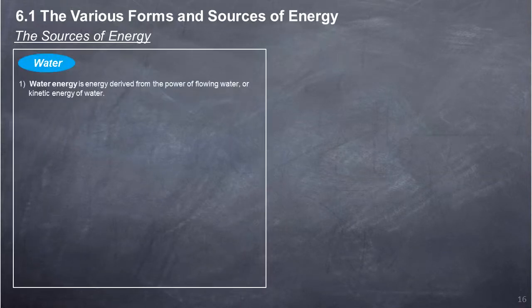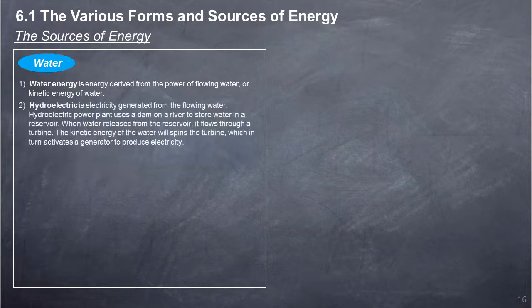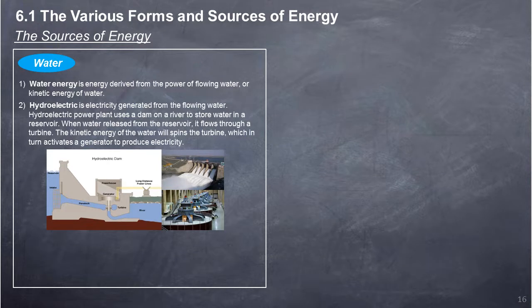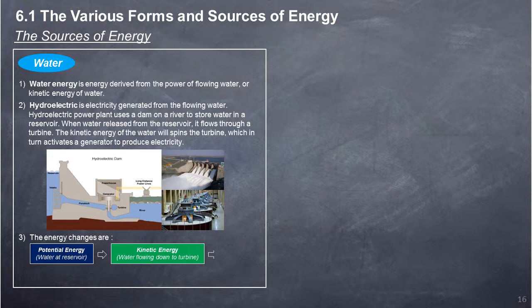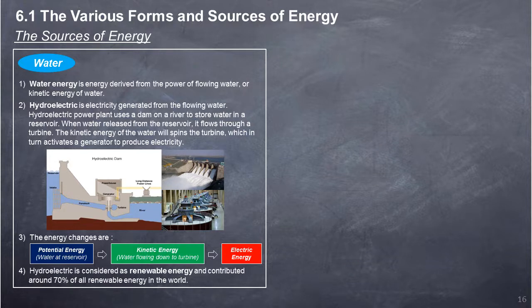Water Energy: Water energy is energy derived from the power of flowing water, or kinetic energy of water. Hydroelectric power is electricity generated from flowing water. A hydroelectric power plant uses a dam on a river to store water in a reservoir. When water is released from the reservoir, it flows through a turbine. The kinetic energy of the water spins the turbine, which activates a generator to produce electricity. The energy changes are: potential energy of water at reservoir → kinetic energy of water flowing down to the turbine → electric energy. Hydroelectric power contributes around 70% of all renewable energy in the world.